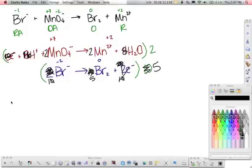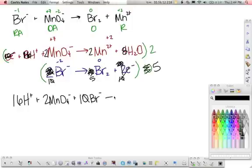And that's all that I can cancel out. So putting everything together, sixteen hydrogens plus two permanganates plus ten bromines gives way to two manganeses, eight waters, and five bromines. And everything balances out. Double check to make sure your charges balance out. They do. They're wonderful. And that is all she wrote. I forgot my charge right here. All right, if y'all have any questions, you know where to find me.